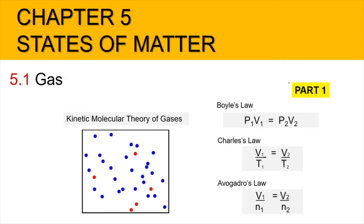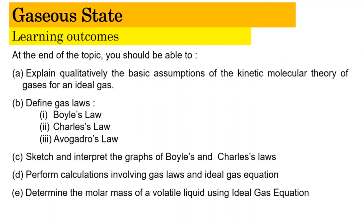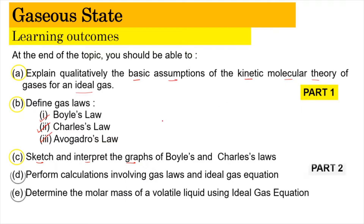This is Part 1 of the video. We're going to learn how to explain the qualitative analysis of the basic assumptions of the Kinetic Molecular Theory for an ideal gas, define the gas laws including Boyle's Law, Charles's Law, and Avogadro's Law, and sketch and interpret graphs involving Boyle's Law and Charles's Law. Learning outcomes D and E will be covered in Part 2.